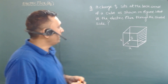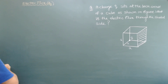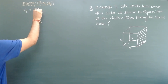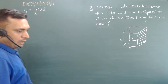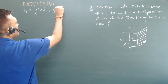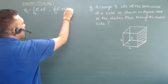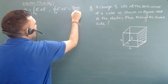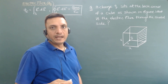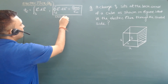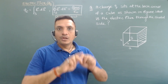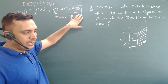We know that electric flux through any open surface is given by the surface integral of E dot dA. If the surface is closed, the flux through the closed surface is given by the total charge enclosed within that surface divided by epsilon naught. This is the flux through a closed surface, and we call this the integral form of Gauss's Law. Whenever a closed surface is given and you know the total charge inside it, flux equals charge enclosed divided by epsilon naught.